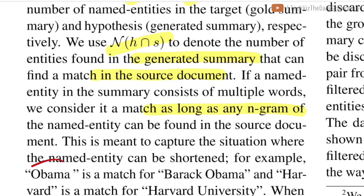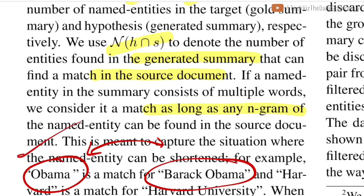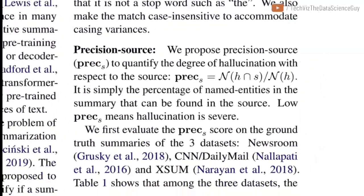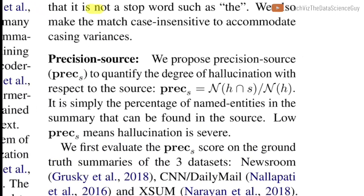For example, if the model generated 'Obama' and the ground truth had 'Barack Obama', these entities would be considered part of the intersection. But this has its own limitations: if 'Obama' was in the ground truth and the model generated 'Barack Obama', since there is an intersection of unigrams you'd consider it a hit — but generating the extra word 'Barack' is still incorrect because we don't know if the source document was talking about Barack Obama, Michelle Obama, or someone else. They don't consider stop words and perform all matchings in a case-insensitive manner.